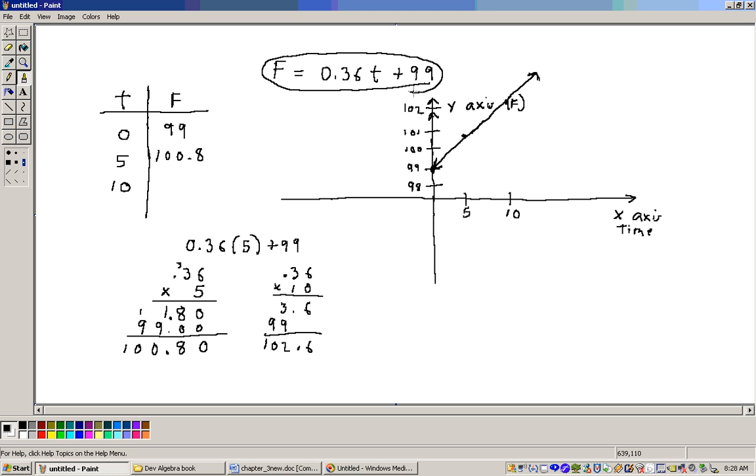But graphing linear equations is just a matter of plotting points. Like this last point was 102.6 was the y value, and this is the x value. Each one of these is a point. Since we evaluated right in this linear equation, we'll get three points on a line. Let's go ahead and do another example.